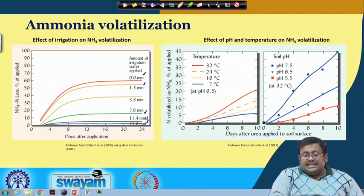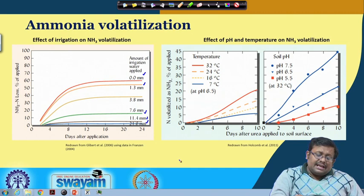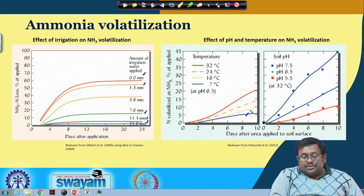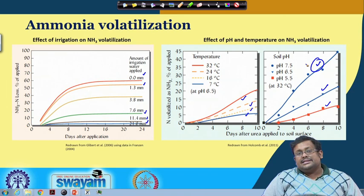You can also see the effect of pH and temperature on ammonia volatilization. The x-axis shows days after urea applied to the soil surface, and the y-axis shows nitrogen volatilization as ammonia. As temperature increases from 7 to 16 to 24 to 32°C, the nitrogen volatilization loss increases. With decreasing pH — from 7.5 to 6.5 to 5.5 — the higher pH (alkaline condition) basically favors ammonia volatilization, while acidic conditions lower ammonia volatilization.